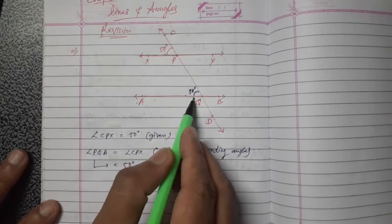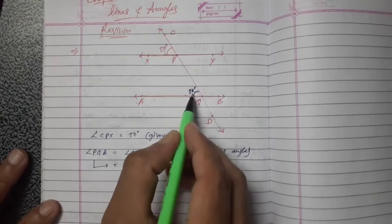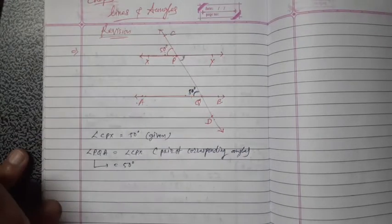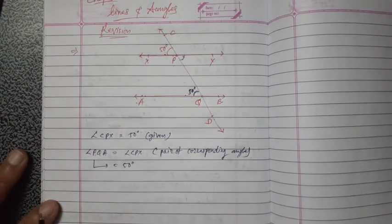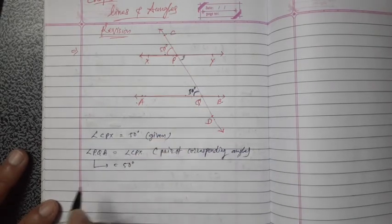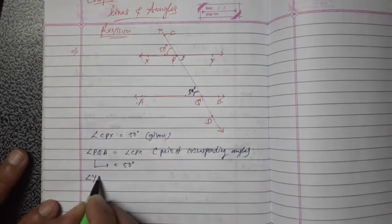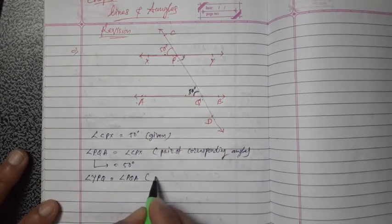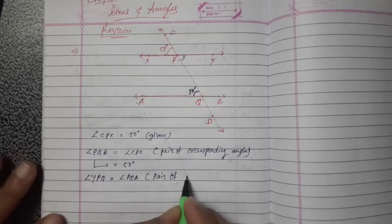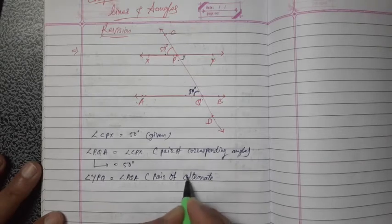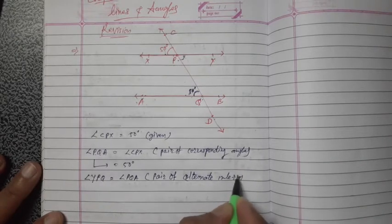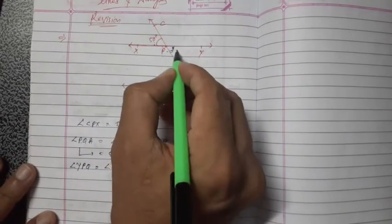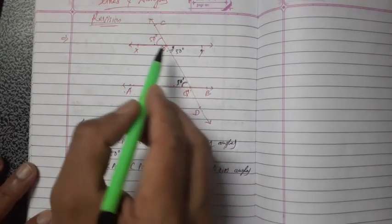PQA equals 50 degrees — write that down. Now PQA is on the interior side, so we make a pair with the interior angle YPQ. Both are interior and on opposite sides, so they are called a pair of alternate interior angles and they are equal. So angle YPQ = angle PQA.